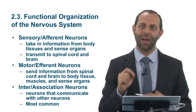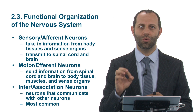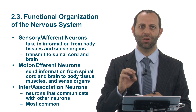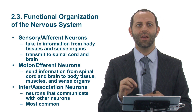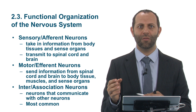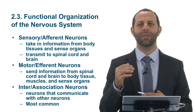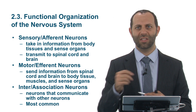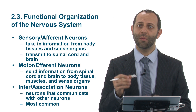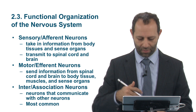In between the sensory and motor neurons are interneurons, or association neurons. These are the neurons that communicate information between the motor and sensory neurons, and they are the most abundant within the body.